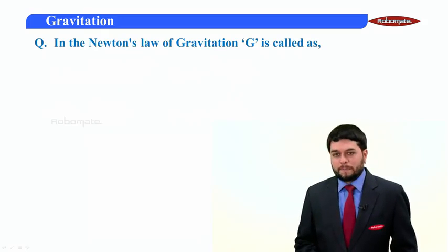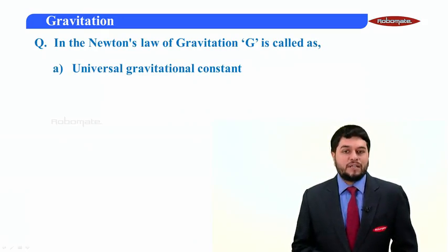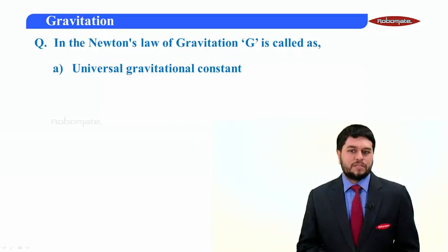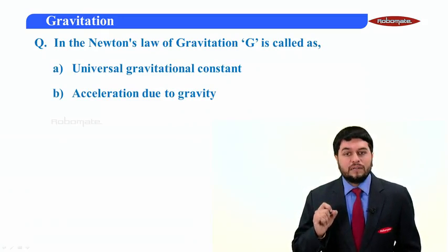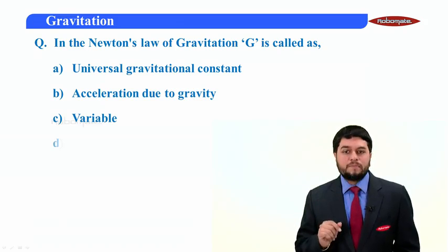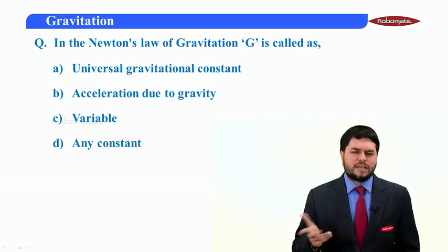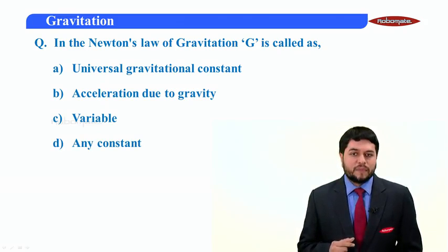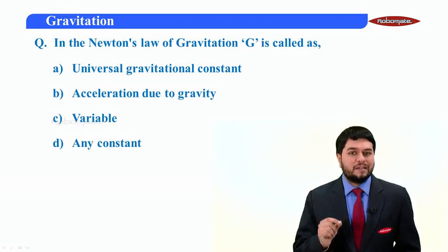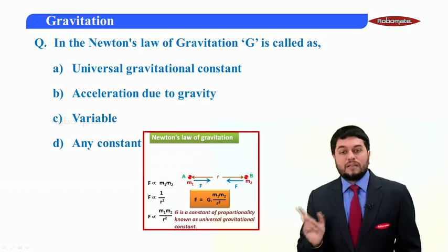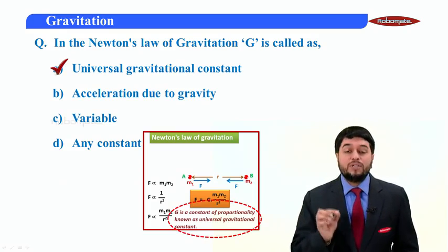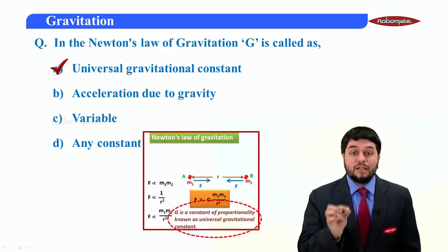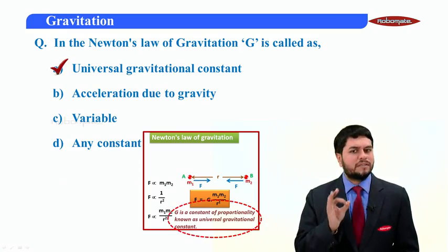Let's see one more question. In the Newton's law of gravitation, what is capital G? Is it universal gravitation constant? Is it acceleration due to gravity? Or is it a variable? Or is it just any constant? In this case, just remember this, a very critical thing. Capital G, yes, here it is. We had done this. We understood that capital G is called the universal gravitational constant. It's a universal constant.